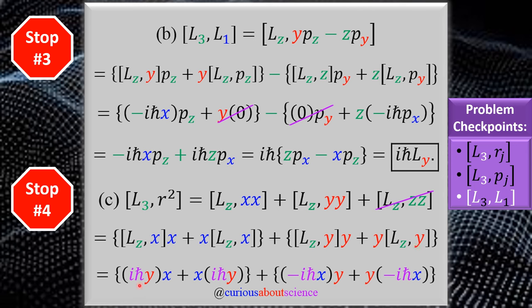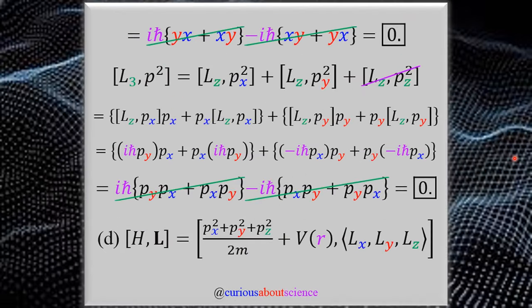Plugging in the results from part A, everything now has an iℏ term which we factor out. We end up with YX plus XY in the first term and then minus iℏ times XY plus YX. Position coordinates commute, so YX equals XY, and they cancel perfectly. We conclude [L3, R²] = 0.